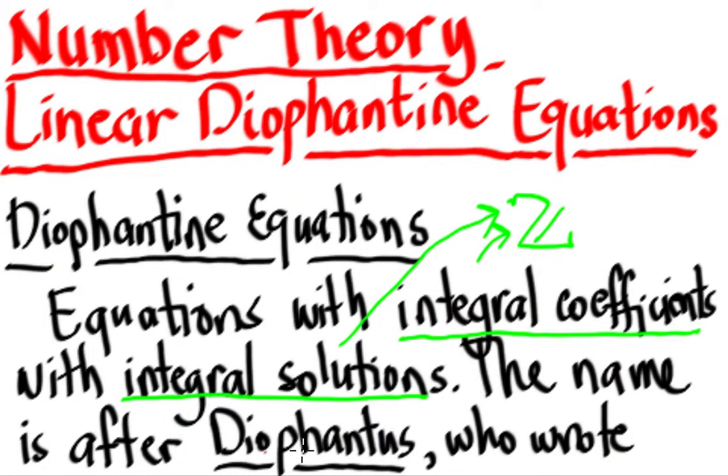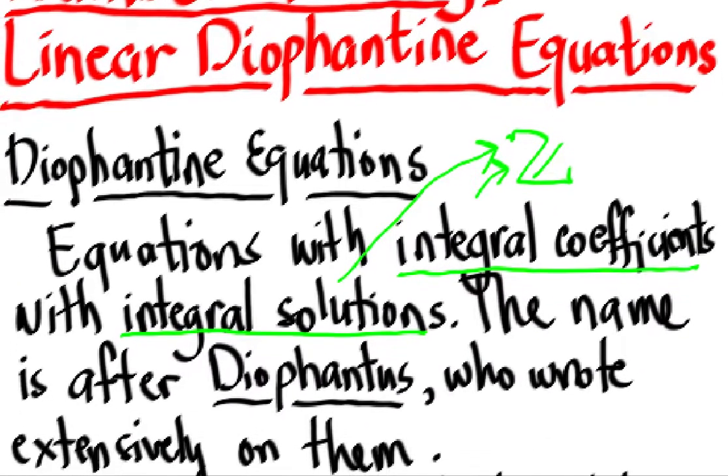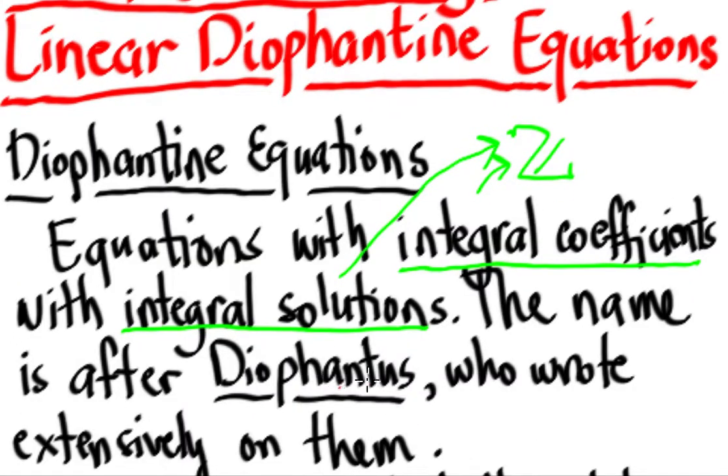Now, the name is after Diophantus, one of the great mathematicians of antiquity, who wrote extensively on them. So that's it. Again, Diophantine equations are equations with integral coefficients and with integer solutions. The name is from Diophantus, who wrote extensively on them. Maybe you heard Diophantus is famous, the one who is the author of the famous Arithmetica, which Fermat himself edited, the Fermat's last theorem.